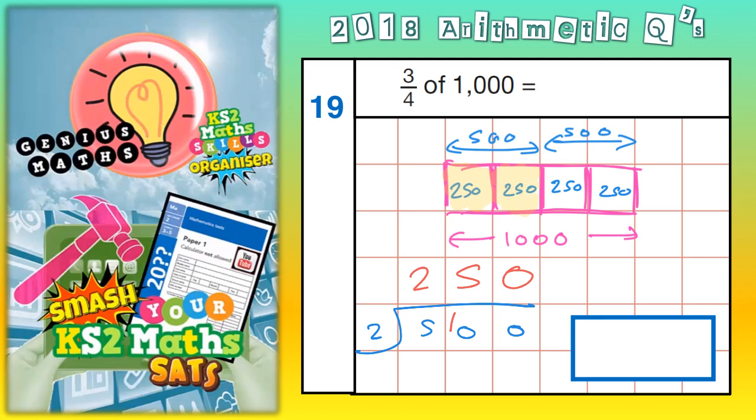Two quarters is two lots of two hundred and fifty. Three quarters is three lots of two hundred and fifty. So, we basically need three lots of two hundred and fifty.